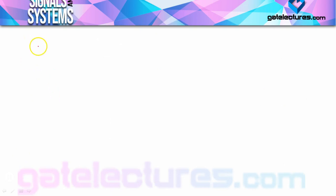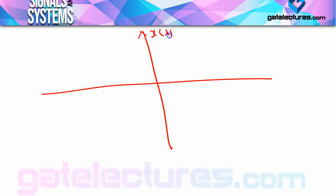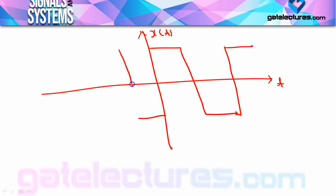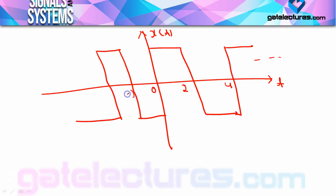Periodic and non-periodic signal का एक example देखिए। यह कोई signal x(t) है जो periodic है। यह signal इस तरीके से बना हुआ है और repeat हो रहा है बार-बार। Time axis पर: 0, 2, 4, −2, −4। आप देख सकते हैं जो काम 0 पर हो रहा है, same काम 4 पर हो रहा है। 0 से 4 के बीच एक cycle complete हो गई, फिर 4 से new cycle start हो गई। तो signal अपने आपको repeat कर रहा है, और यहाँ पर time period T = 4 है। This is the example of a periodic signal।